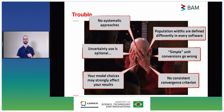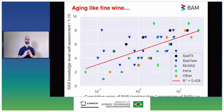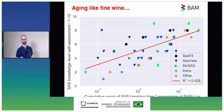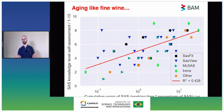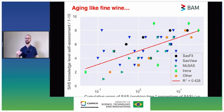Now for some incidental results: we asked people to indicate how long they've been working with small angle scattering — that's on the horizontal axis, as years of experience multiplied by percentage of time spent on SAS — and on the vertical axis is their self-assessment of how good they are. There is a reasonable correlation: the longer you work in small angle scattering, the better you think you are.